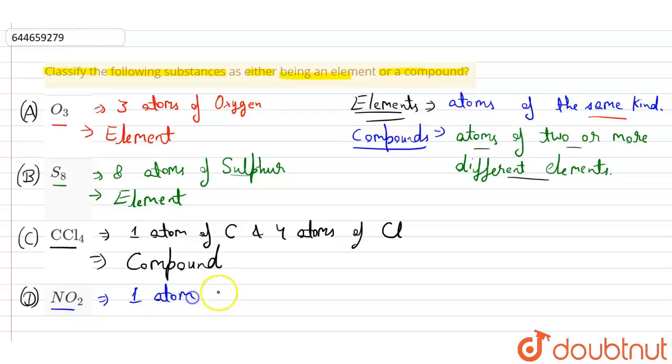It contains one atom of N that is nitrogen and two atoms of O that is oxygen. So it contains two or more different elements. So NO2 is also a compound. So our answer is O3 is an element, S8 is an element, CCl4 is a compound, and NO2 is a compound. Thank you.